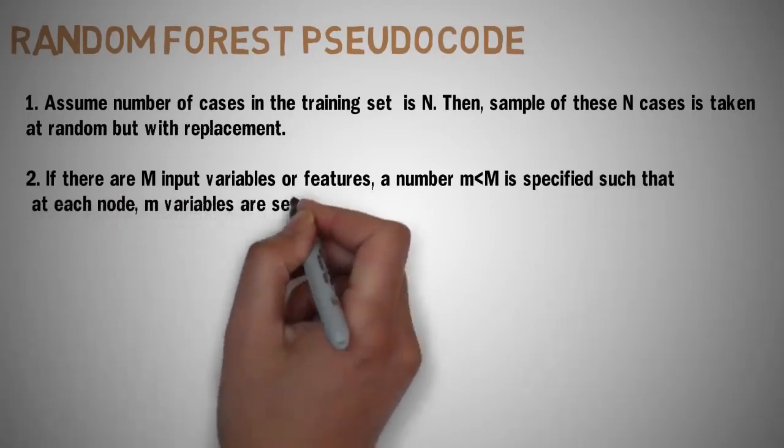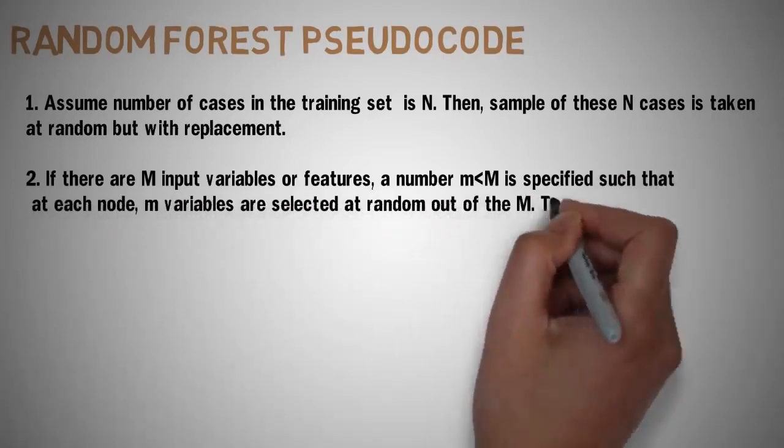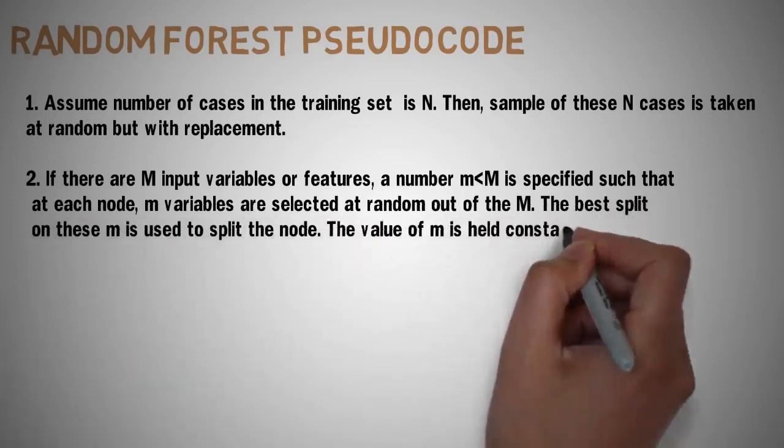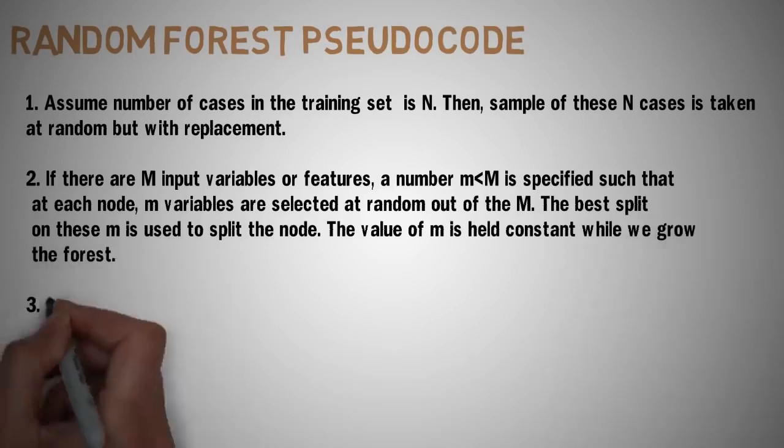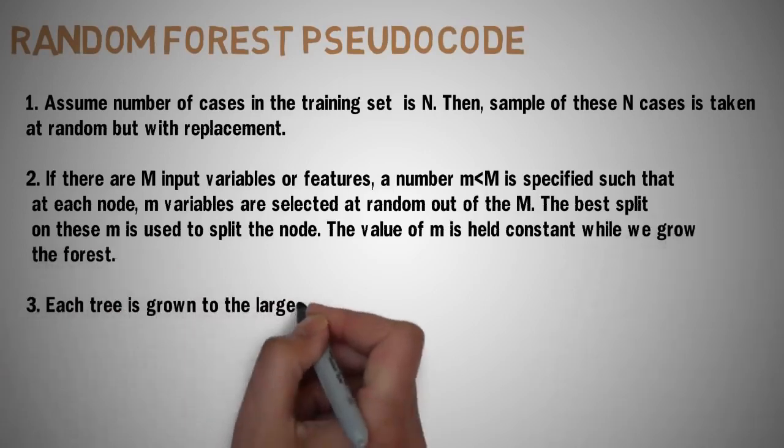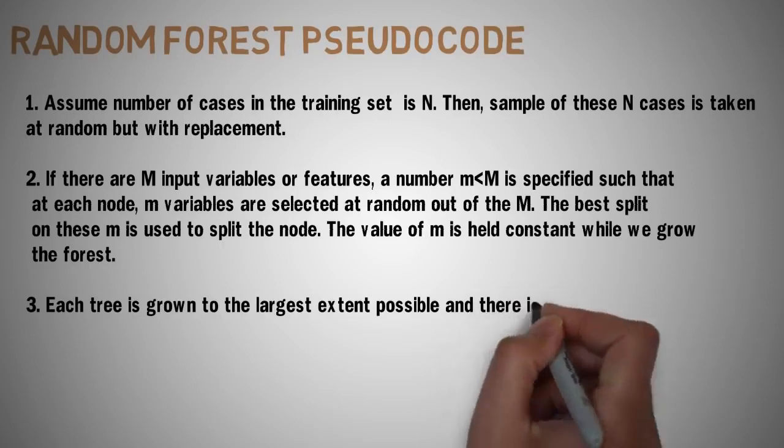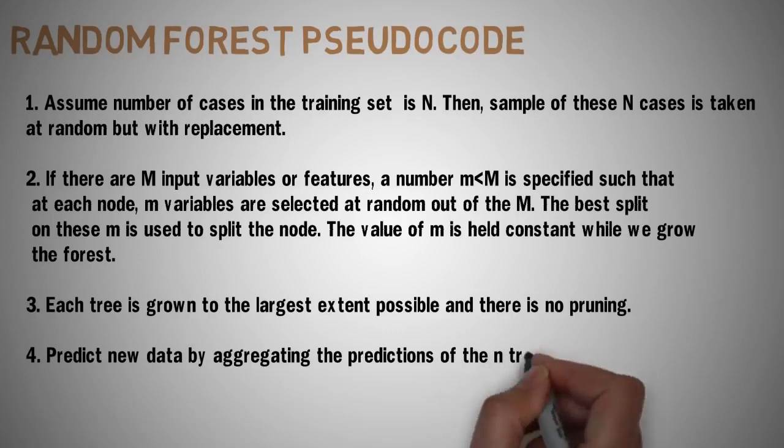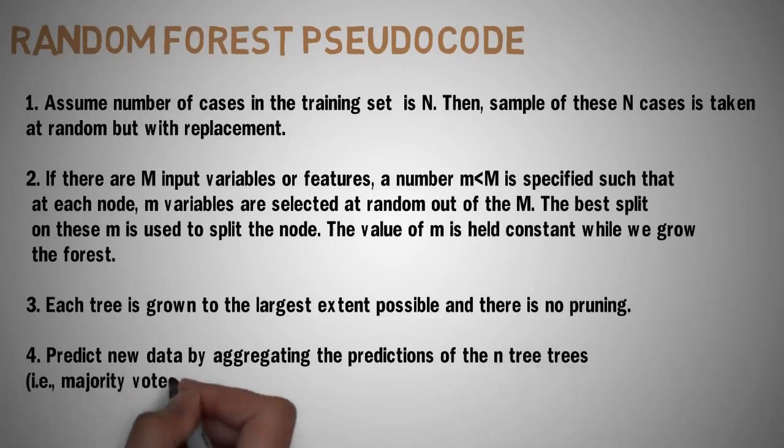If there are m input variables or features, a number m' smaller than m is specified such that at each node m' variables are selected at random out of the m. The best split on these m' input variables is used to split the node. The value of m' is held constant while we grow the forest.